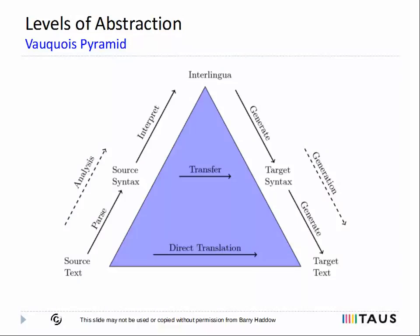An alternative way of classifying MT systems is according to the level of abstraction at which they operate. One way of representing these levels of abstraction is the VOCOA pyramid, as shown in this slide. At the bottom of the pyramid, we have methods that operate only on the surface form — in other words, they only consider the text and don't use any higher level of abstraction. These methods include phrase-based machine translation and example-based machine translation. In the middle of the pyramid, we have methods that operate at the syntactic level. They must first perform some analysis on the text to create a syntactic representation and then apply some transforms in this representation, then finally regenerate surface text from the transformed syntax.